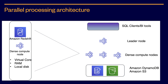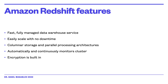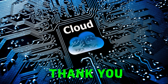Like other AWS services, you only pay for what you use. You can get started for as little as $0.25 per hour, and at scale Amazon Redshift can deliver storage and processing for approximately $1,000 per terabyte per year. Amazon Redshift is a fast, fully managed data warehousing service that scales easily with no downtime, supports columnar storage and parallel processing architecture, automatically and continuously monitors your cluster, and has encryption as a built-in feature.